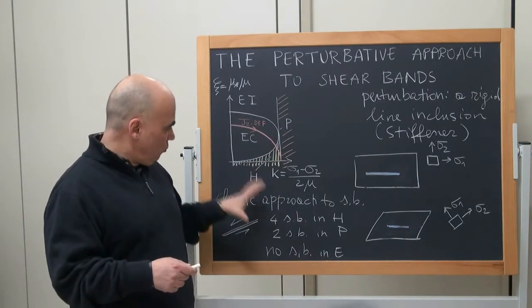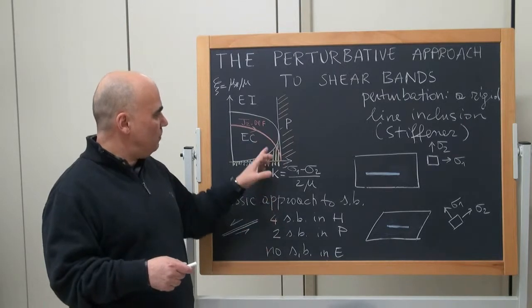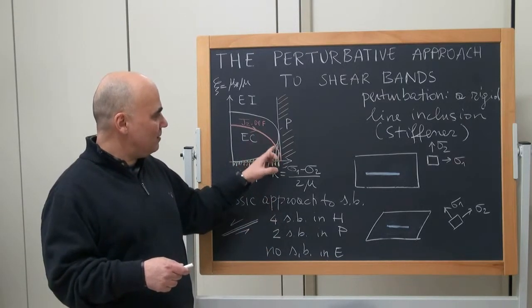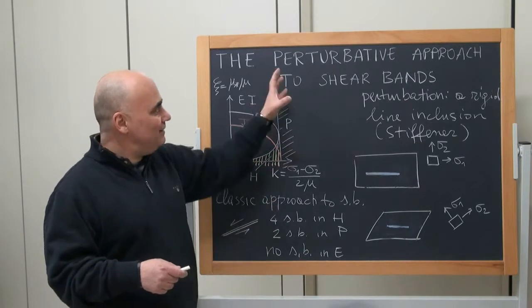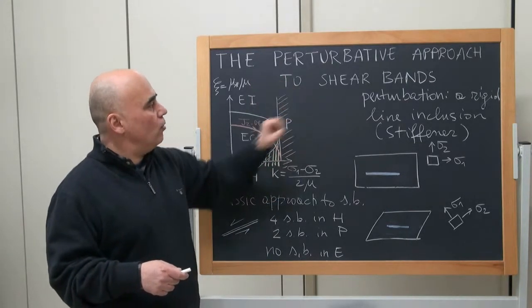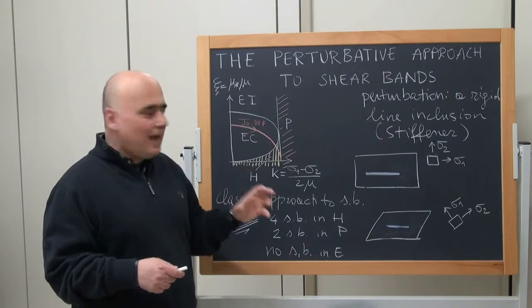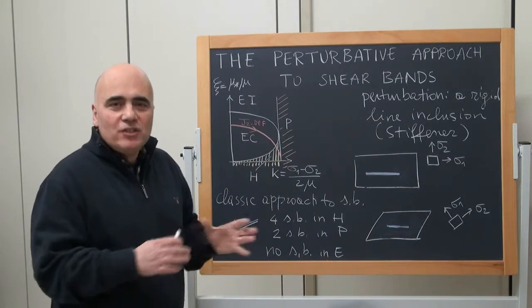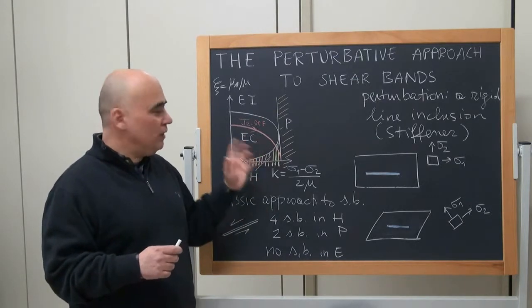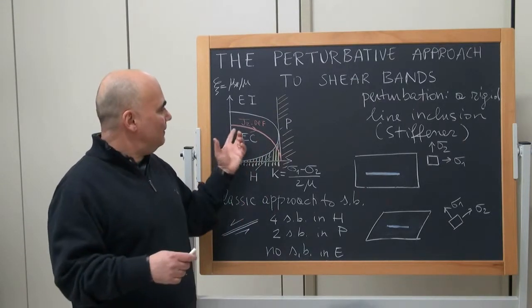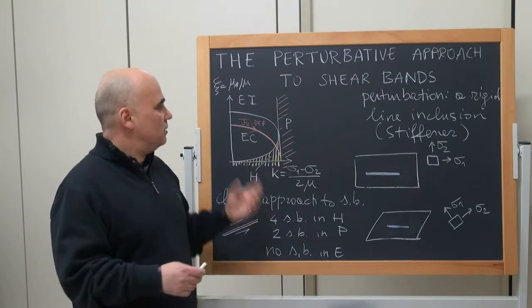Formally, using the classic approach, shear bands are only possible when the stress state touches this boundary. The idea of the perturbative approach is to analyze the response of the material pre-stressed in a uniform way, near the border of ellipticity and in particular at increasing state of pre-stress.